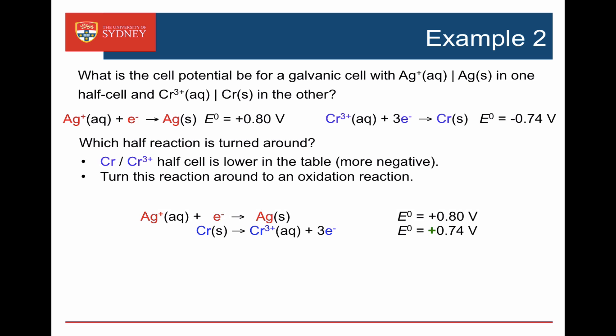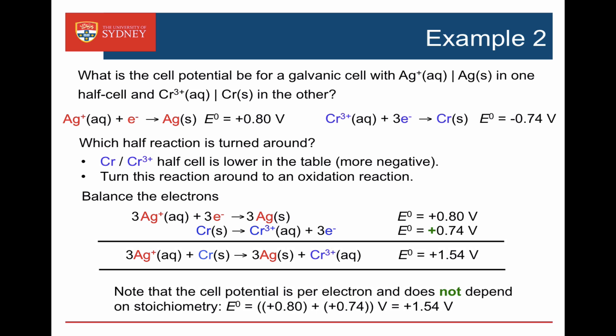We combine it with the reduction half cell for silver: silver ions plus an electron goes to silver. But we need to be careful — silver only requires one electron whereas chromium produces three electrons, so we multiply the silver half reaction by three. Now three silver ions and three electrons are involved, the electrons cancel, and we get three silver ions plus chromium metal going to three silvers plus chromium 3+. Adding the cell potentials: plus 0.8 plus 0.74 gives plus 1.54 volts. Note we did not multiply the first potential by three — cell potentials are per electron and don't depend on stoichiometry. It's positive, so we've turned around the correct one.